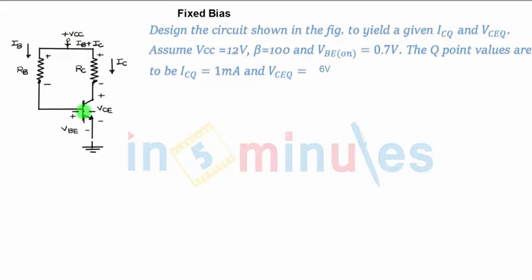Can say, Rb is connected to the base. Vbe, we are forward biasing with respect to Vcc. So it is fixed bias type configuration. What they have given? They have given us the value of Icq and Vceq and they have asked us to find the value of Rb and Rc.